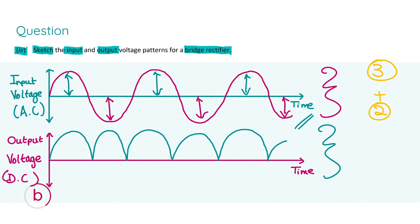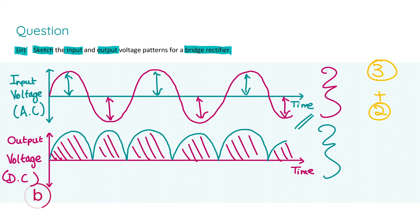For the output voltage: the bridge rectifier responds to the AC signal's changing polarity. In the positive half-cycle, two of the four diodes become forward biased and conduct; in the negative half-cycle, the other two diodes become forward biased and conduct. In both half-cycles the output voltage across the resistor has only one direction — always positive — so it must be direct current, which earns two marks.